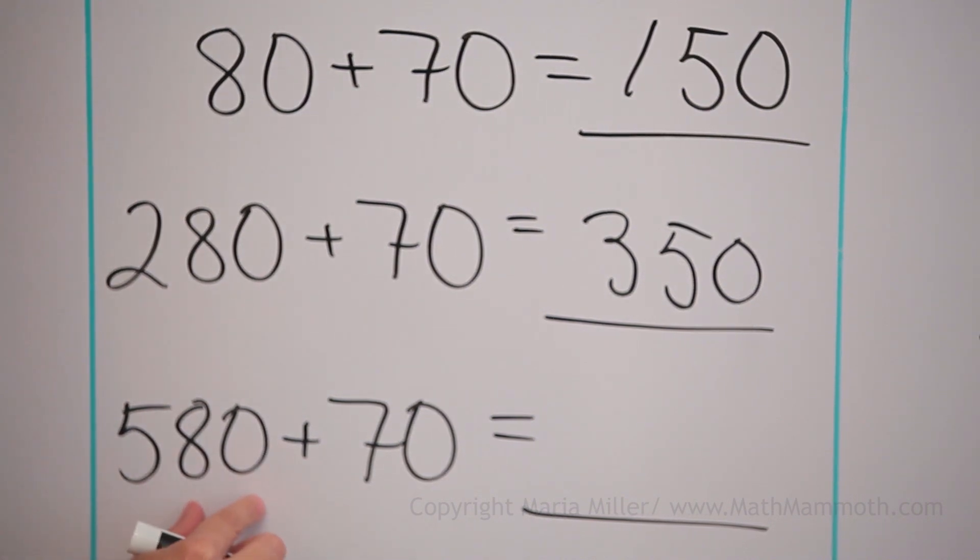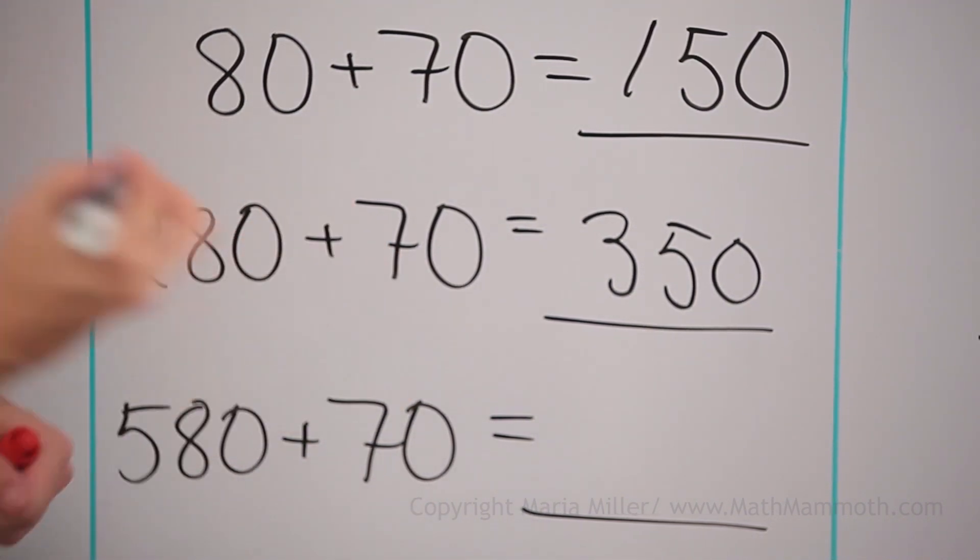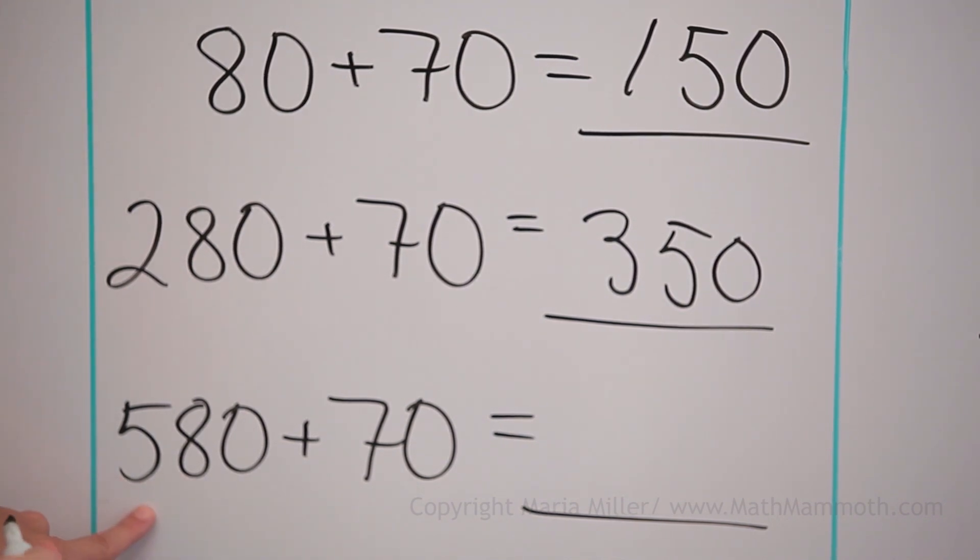And this one too, it has the eighty and seventy, so similarly, it will go fifty over the next hundred. And here's five hundred, it will go to six hundred and fifty.